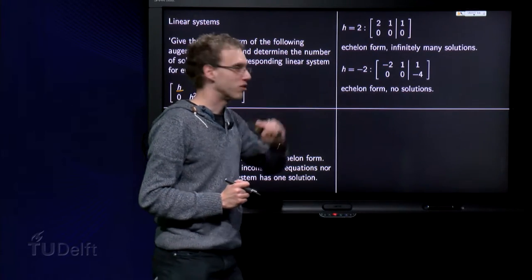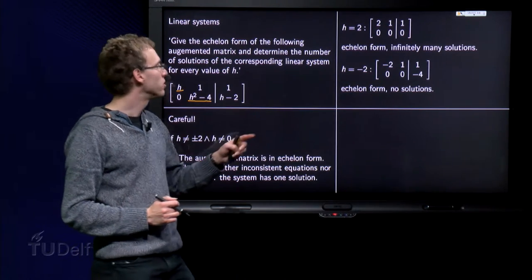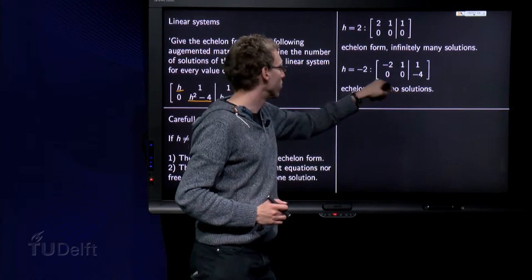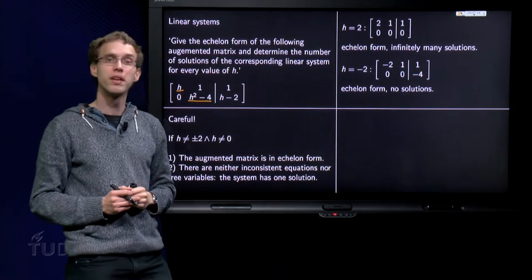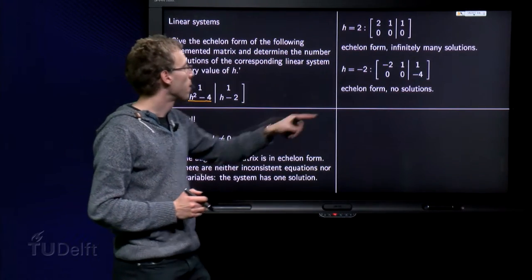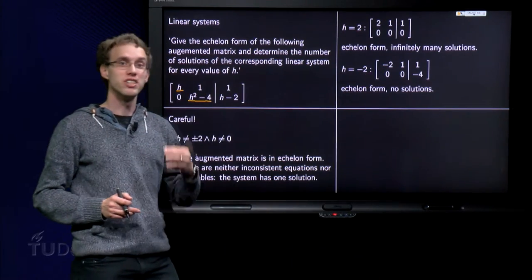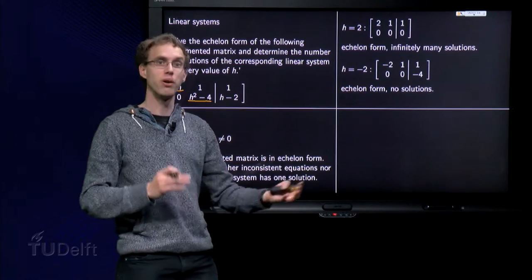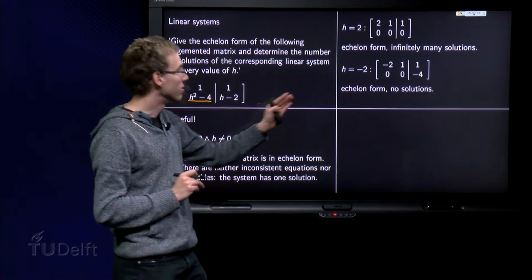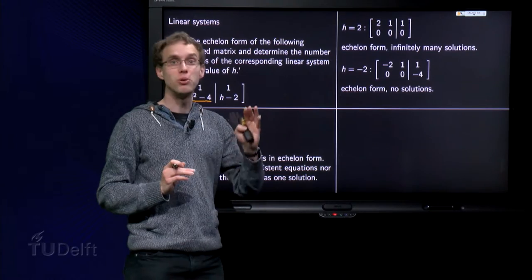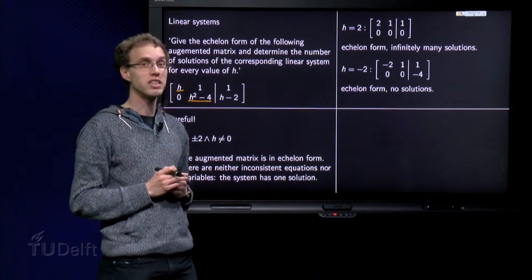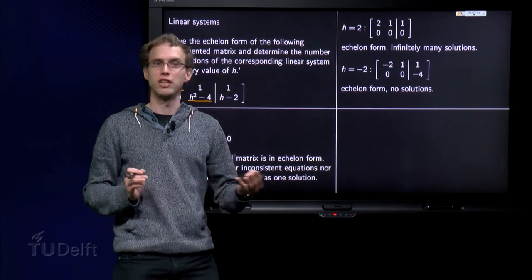For h equals minus 2, just plug in h equals minus 2, we get again a 0 over here, so a 0 here, a minus 4 there, and a minus 2 over there. So what do we see now? The second row yields 0 times x1 plus 0 times x2 equals minus 4, so 0 equals minus 4. That is not possible, so now the system has no solutions. So for h equals minus 2, the system is inconsistent. Still in echelon form though.